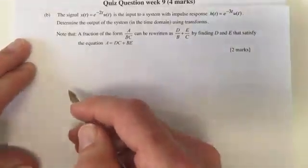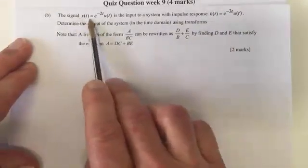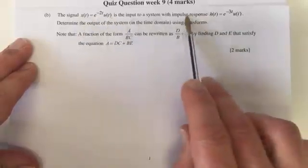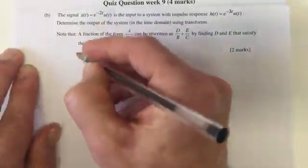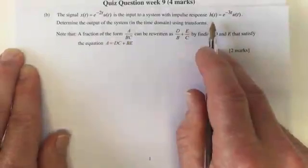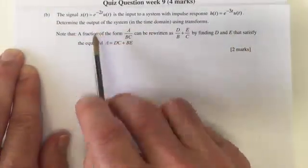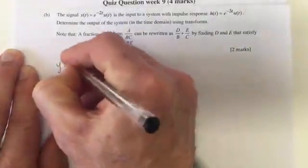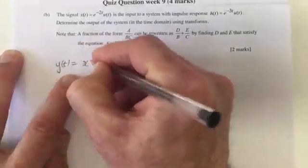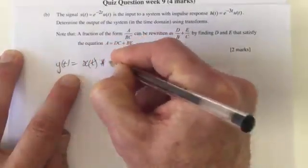Okay, I'm just going to go through this question which was on the quiz. This is a question about a system with a signal that has an input to a system that has an impulse response. And we know now that linear systems, this involves a convolution. So the output of the system is a convolution of the input with the output. So y(t) equals x(t) convolved with h(t).